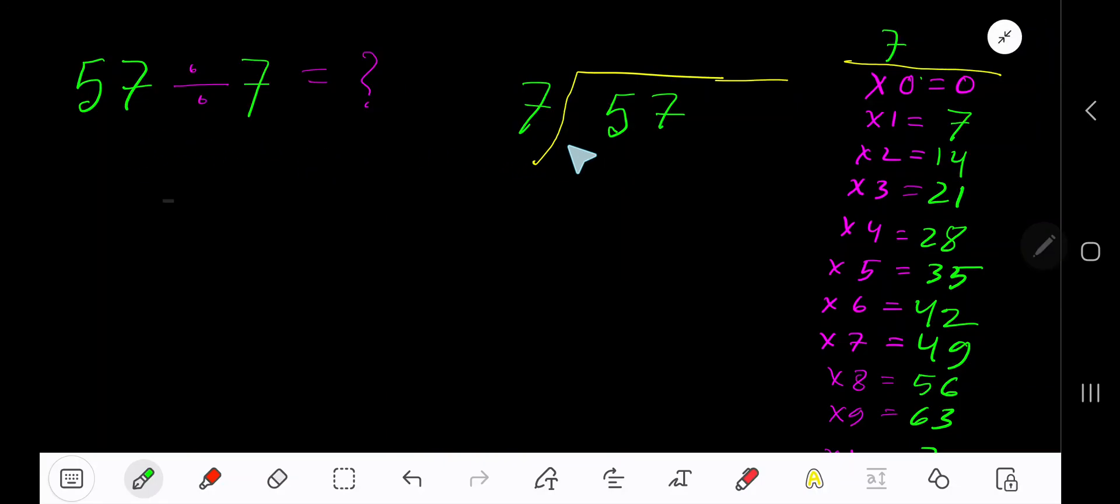57 divided by 7. Here 7 is a divisor, so we need the multiplication table of 7. 7 times 0 is 0, 7 times 1 is 7, 7 times 2 is 14, 7 times 3 is 21. To find out the multiplication table of 7, just start with 7 with the previous step: 0 plus 7 is 7, 7 plus 7 is 14, 14 plus 7 is 21.